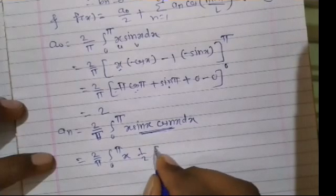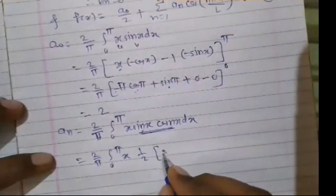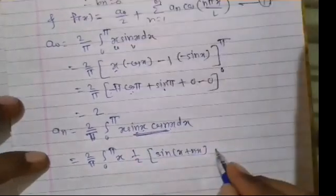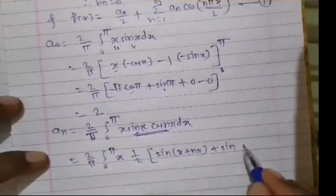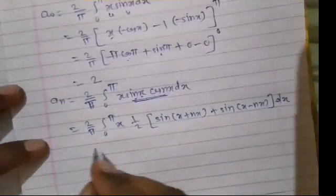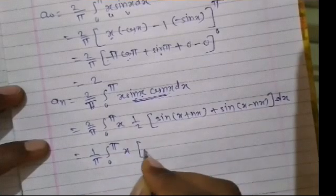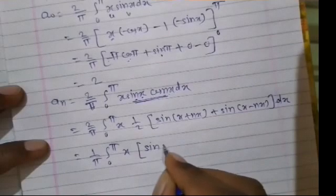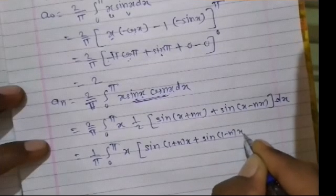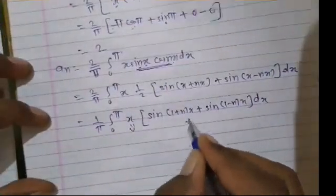We use the formula sin(A)·cos(B) = (1/2)[sin(A+B) + sin(A−B)]. Taking A = x and B = nx, sin(x)·cos(nx) = (1/2)[sin((1+n)x) + sin((1−n)x)]. So an = (2/π)·∫₀^π x·(1/2)[sin((1+n)x) + sin((1−n)x)] dx = (1/π)·∫₀^π x·[sin((1+n)x) + sin((1−n)x)] dx.